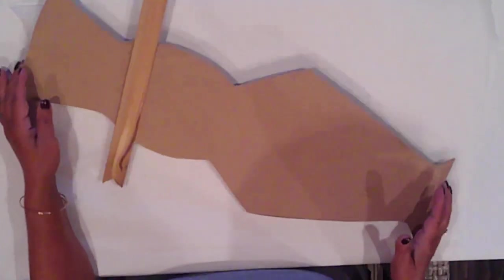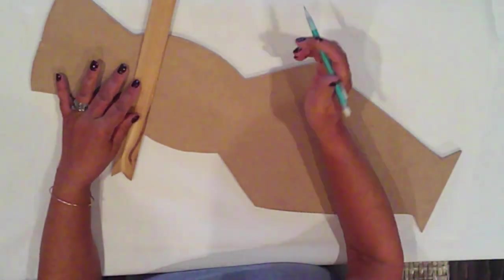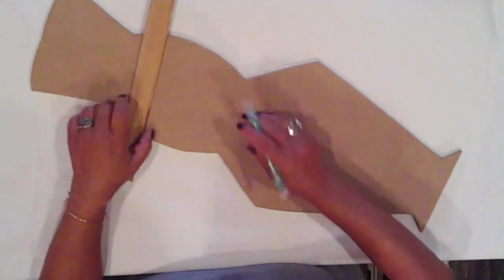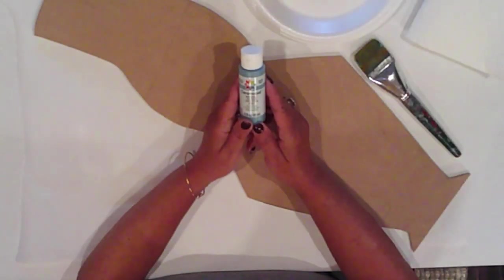With a pencil I'm marking where his hat ends and his face begins. I'll start by painting his body with Ceram Coat acrylic paint in Waterfall.